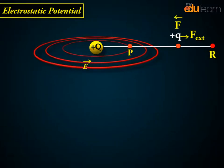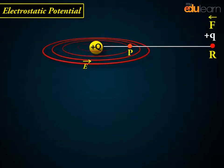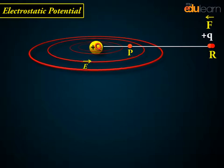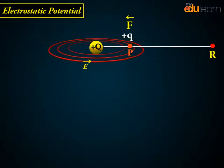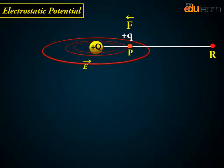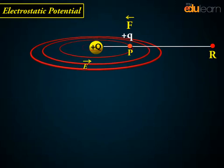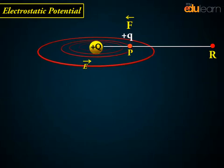If the external force is removed on reaching P, then the electrostatic force will take the charge away from Q. The stored potential energy at P is used to provide kinetic energy to the charge in such a way that the sum of the kinetic and potential energies is conserved.